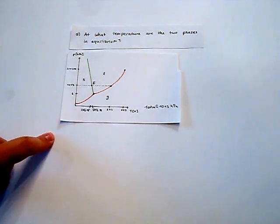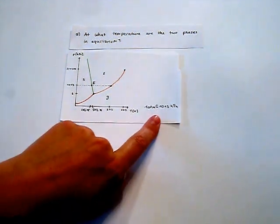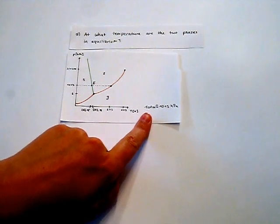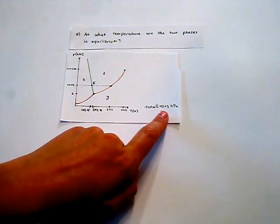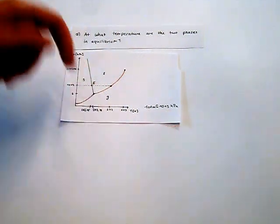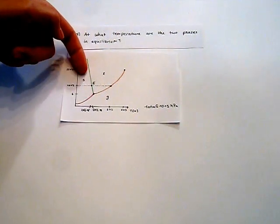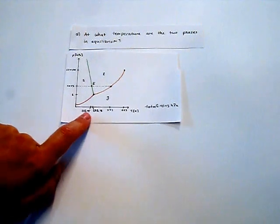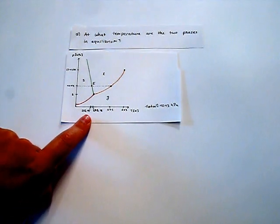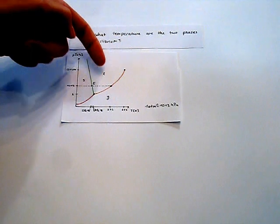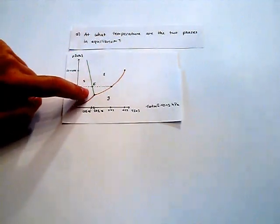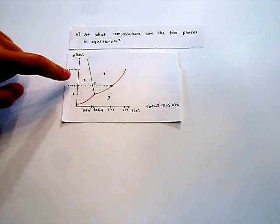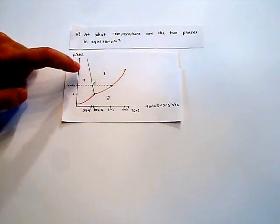And here we can see as we already knew that at one atmosphere, which is equal to 1013 hectopascals, the water is solid under a temperature of 273.15 Kelvin and liquid above it. So this green line here describes the equilibrium of solid and liquid water.